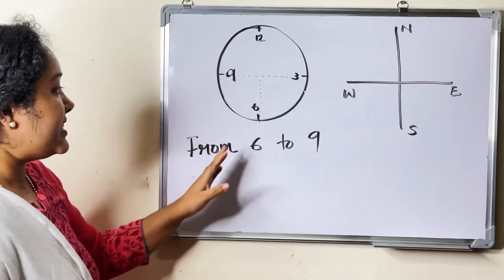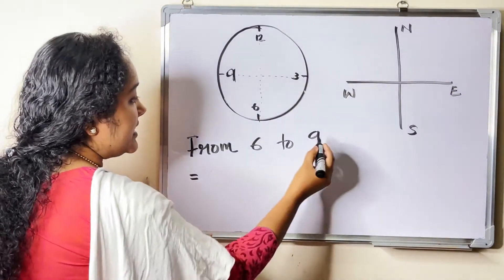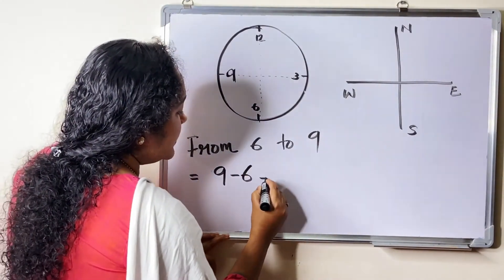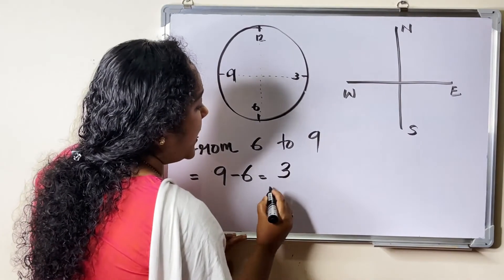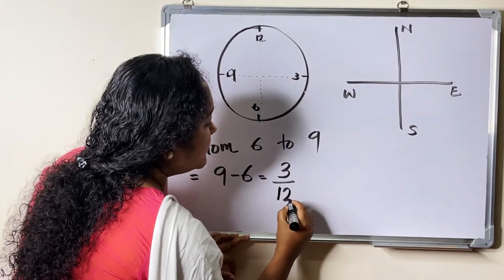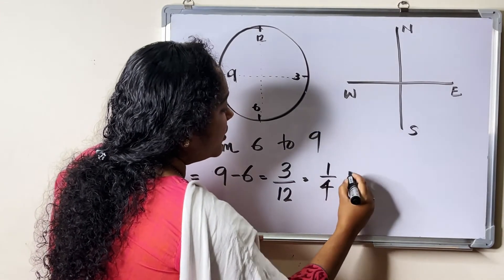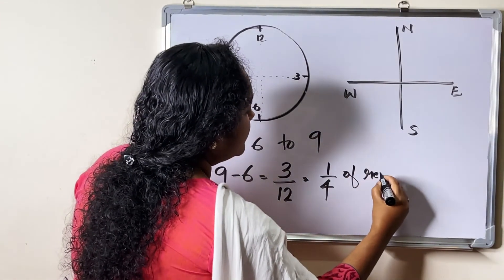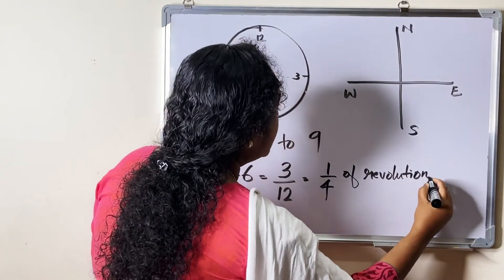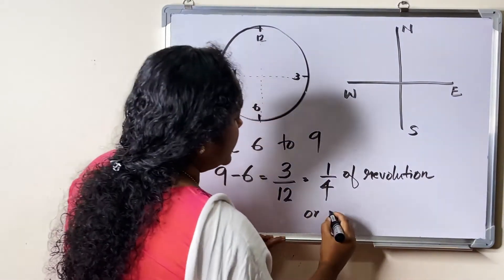Next, from 6 to 9. 9 minus 6 equals 3, divided by 12, which is equal to 1/4 of a revolution. So that is 1 right angle.